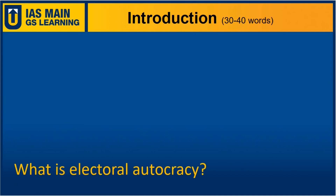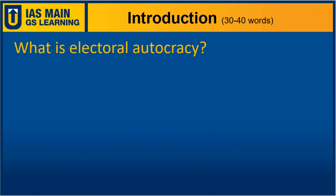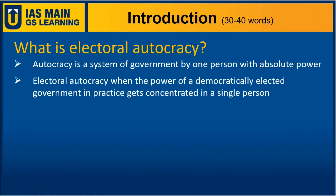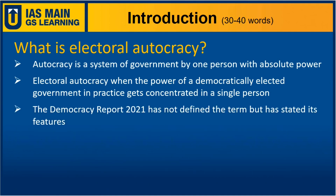In the introduction part, you can write your answer by explaining what is electoral autocracy. You can start by defining autocracy as a system of government by one person with absolute power. Then you should introduce electoral autocracy as when the power of a democratically elected government in practice gets concentrated in a single person, and this single person utilizes this power as per his personal will. It is worth mentioning that the Democracy Report 2021 has not formally defined the term electoral autocracy, but it has stated certain features which we will discuss in the body part.